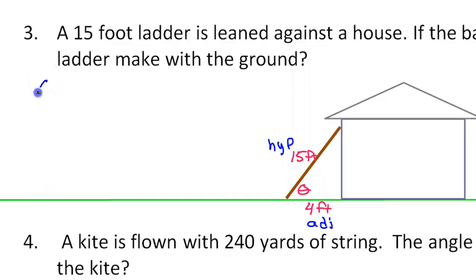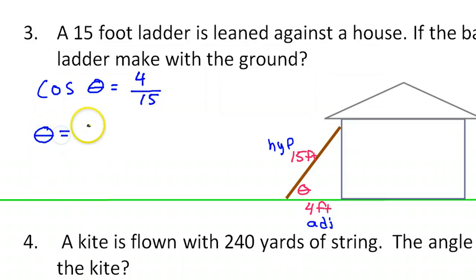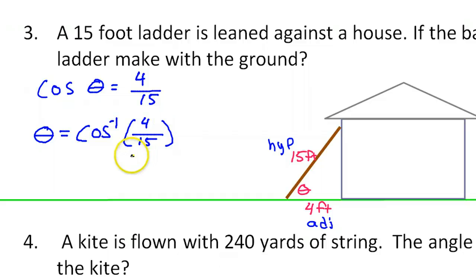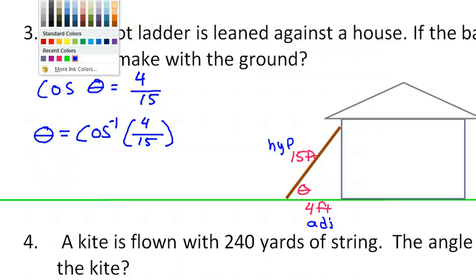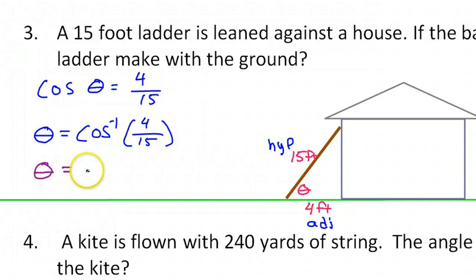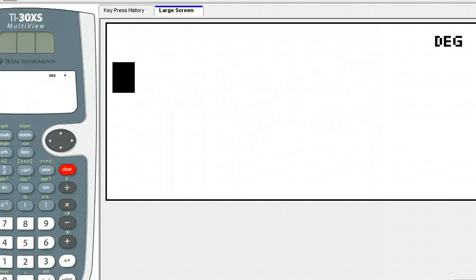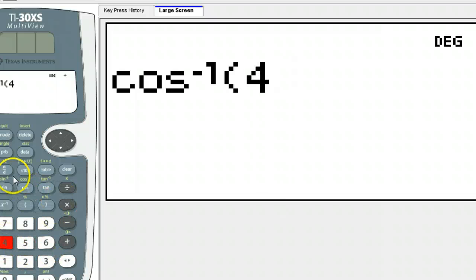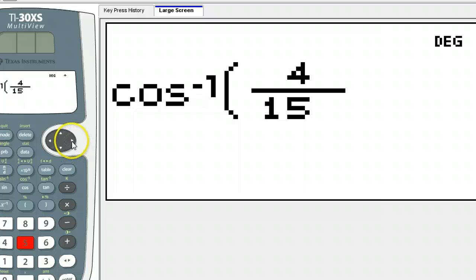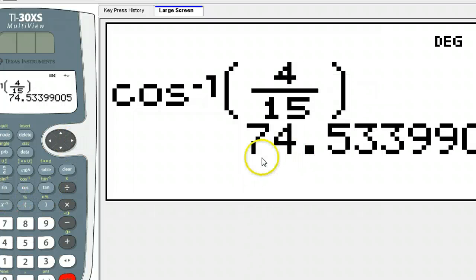I will use the cosine function. The cosine of the angle is adjacent over hypotenuse, so that is four over fifteen. But if you want the angle, you must use the inverse trig function, so that will be the inverse cosine of four over fifteen. You can just put that in your calculator — second cosine, then four over fifteen.